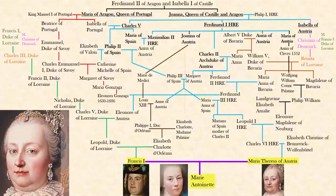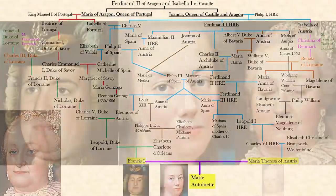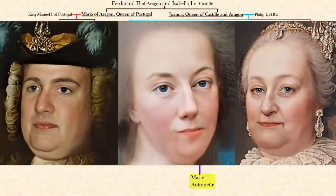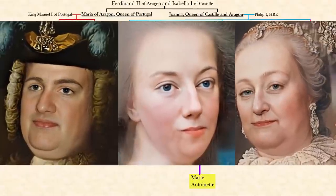Leopold and Eleanor — cousins six times over — have Charles the Sixth. Charles the Sixth married an outsider, and that's how Maria Therese is born. She marries Francis Duke of Lorraine and together they have Marie Antoinette. I can't even count how many different ways Marie Antoinette's parents are related — I stopped at 30, but there are a lot more. Let me know in the comments how many combinations you can count.